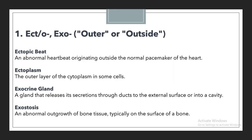The first prefix is ECTO or EXO. I am also assigning the alternative prefix for the same meaning. For example, 'outside' or 'outer' can be represented with two prefixes, so I have associated both prefixes here together. We use ECTO or EXO in order to indicate something as outer or outside.